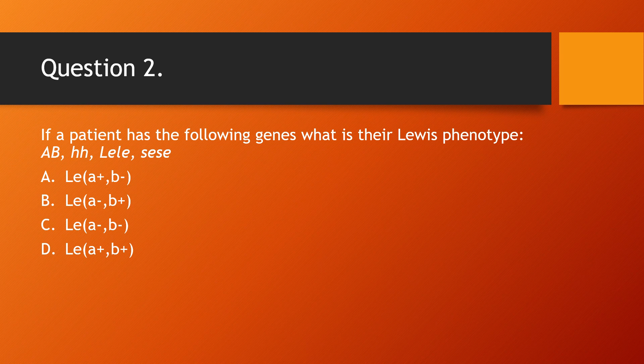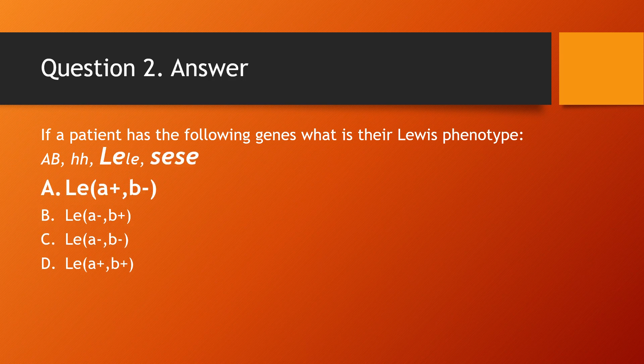Question 2: If the patient has the following genes — AB, lowercase h, lowercase h, capital LE, lowercase le, lowercase se, lowercase se — what is their Lewis phenotype? Choices: A) Lewis A positive B negative, B) Lewis A negative B positive, C) Lewis A negative B negative, D) Lewis A positive B positive. The answer is A, Lewis A positive B negative. Notice that the person does have the capital LE gene, but does not have the capital SE gene.